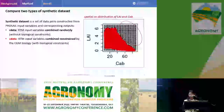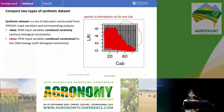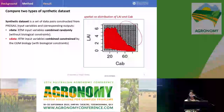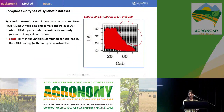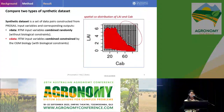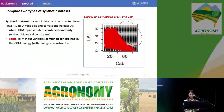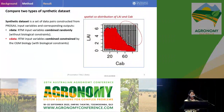This figure shows the spatial co-distribution of LAI and leaf chlorophyll content. The black points show the combination of these two crop traits in the dataset without constraints, while the red points indicate the combination in the dataset with biological constraints. We can see that introducing the biological constraints can potentially remove those combinations that cannot exist in real crop growth status as defined by the crop growth model.